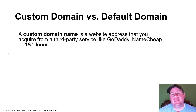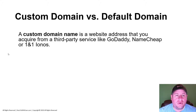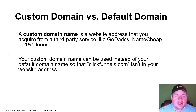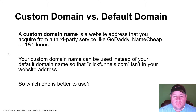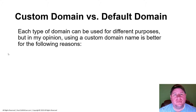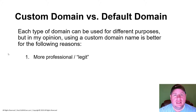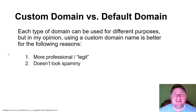A custom domain name is a website address that you acquire from a third-party service like GoDaddy, Namecheap, or 1&1 IONOS. Your custom domain name can be used instead of your default domain name so that .clickfunnels.com isn't in your website address. You might be asking: which one is better? Well, each type can be used for different purposes, but in my opinion, using a custom domain name is better for the following reasons.